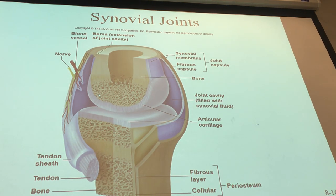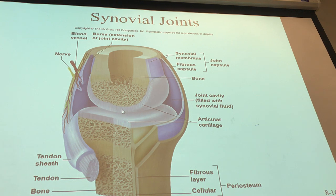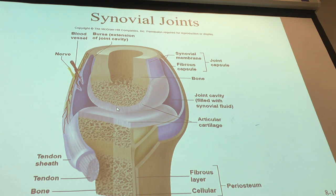In synovial joints, no blood vessels penetrate through to the cartilage. There are blood vessels and nerve supply in the capsule, but none go to the cartilage itself. This means if you tear the cartilage, there are no nutrients available to repair and heal it. There are also no nerves in the articular cartilage.